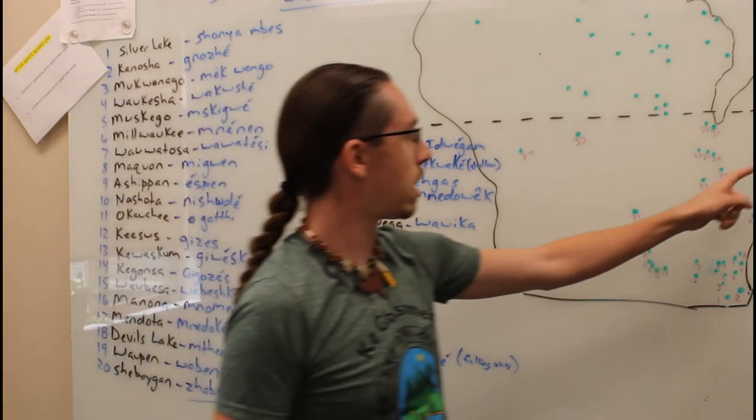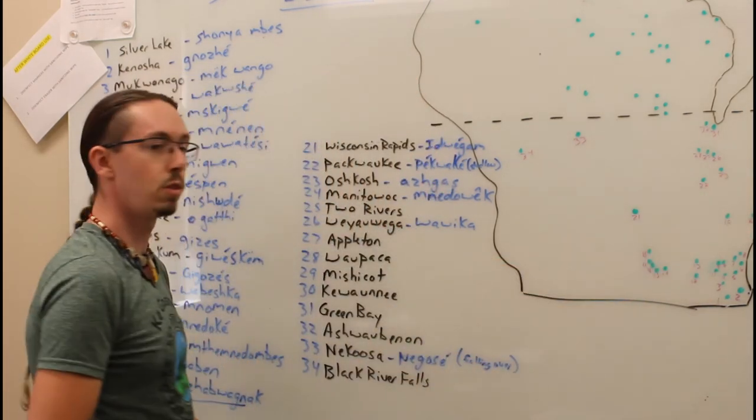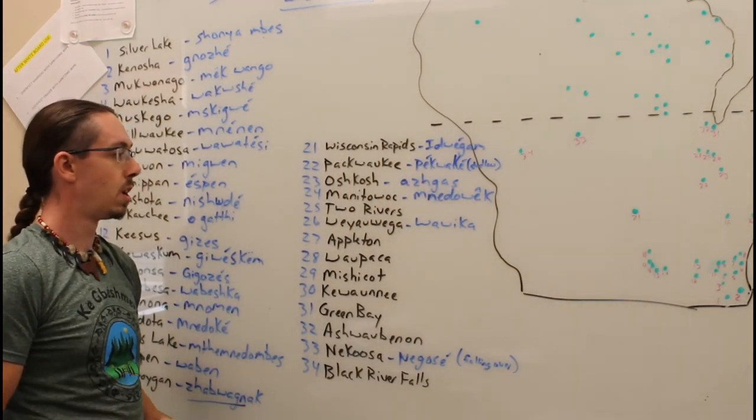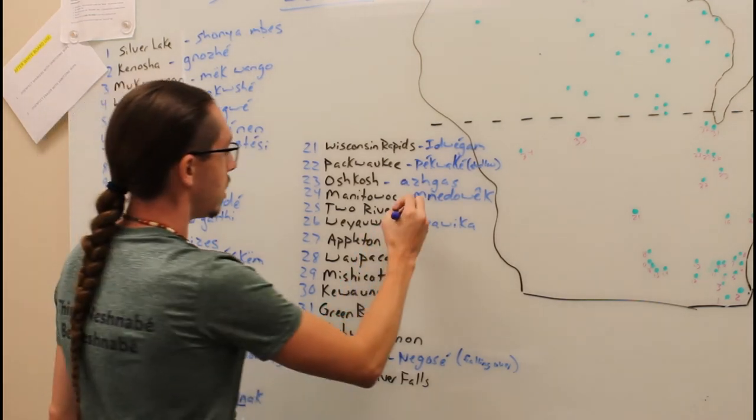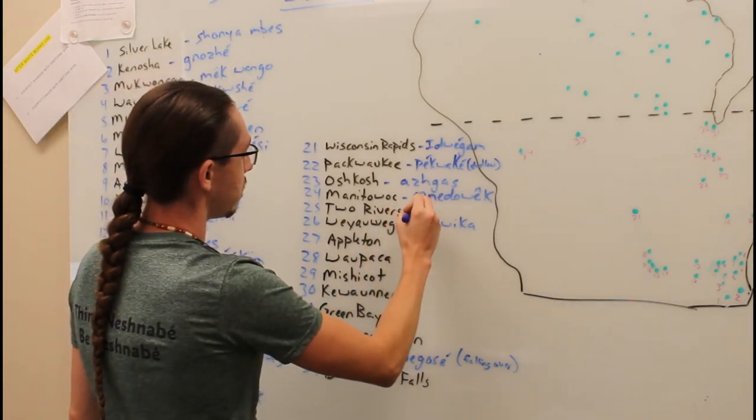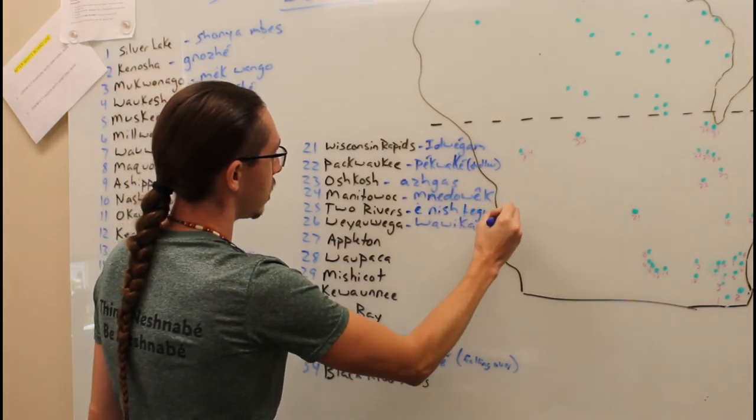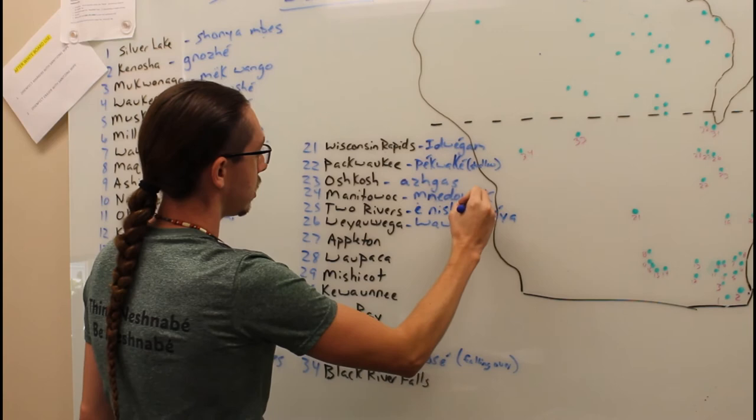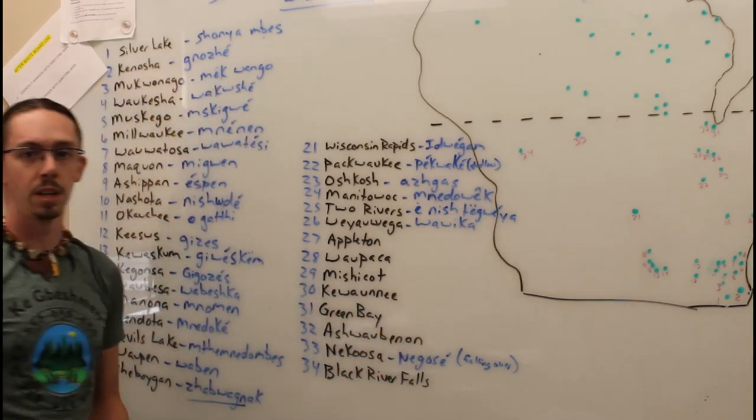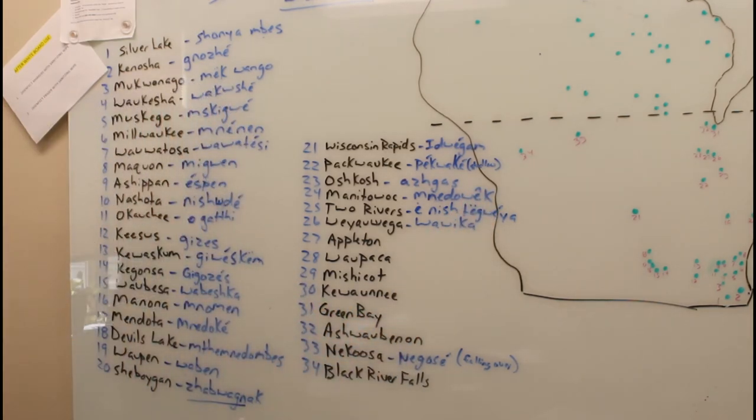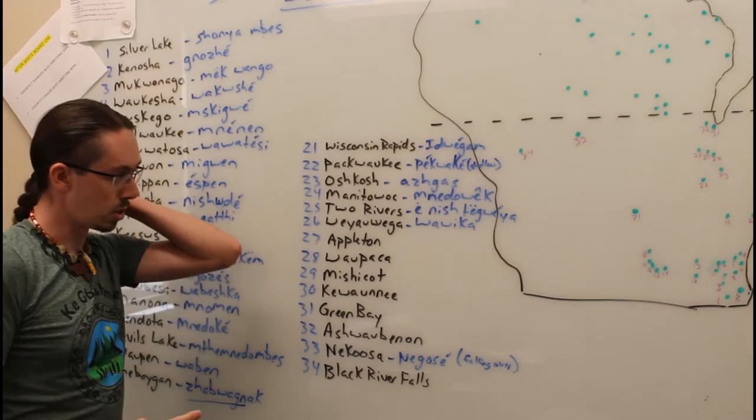Moving up to 25 here, Two Rivers, Wisconsin. Our word for that is Nishutegwayah. That literally means two rivers.